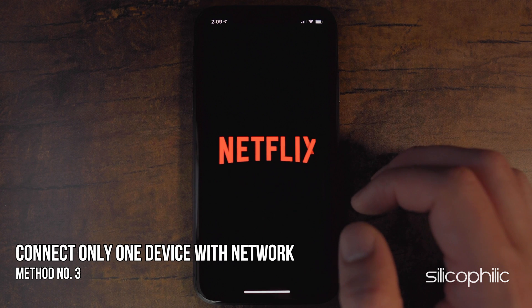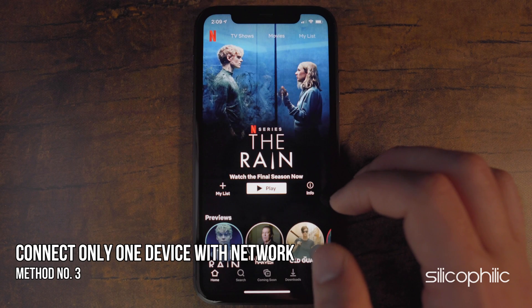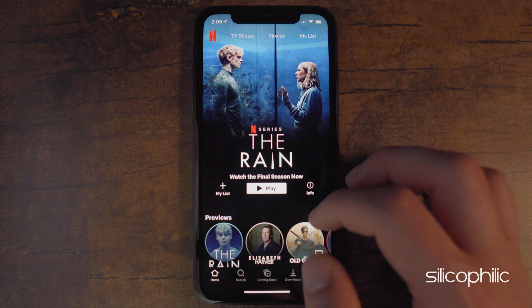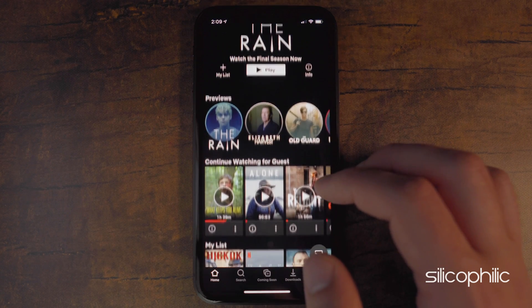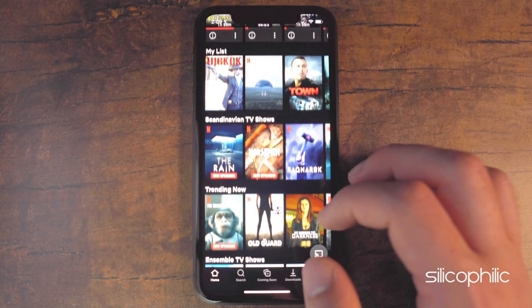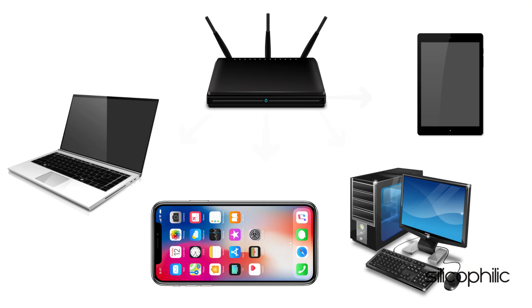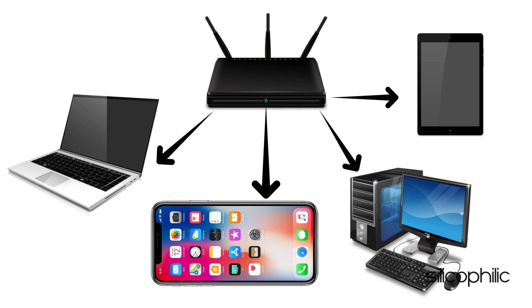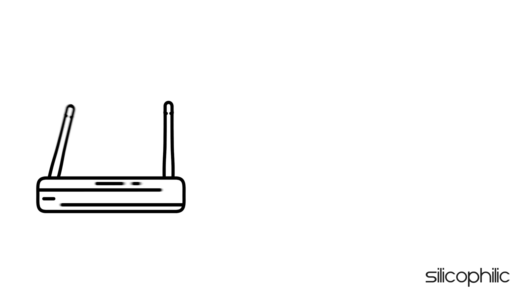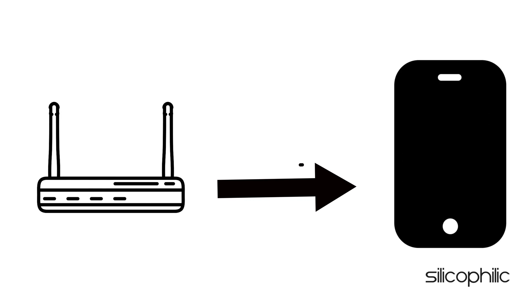Method 3. The next thing you need to do is ensure that only the device with the issue is connected to the network. This way, no other device will split the bandwidth and cause network issues for your Netflix. So only connect to the Wi-Fi with the device having the Netflix error and see if the issue gets fixed.